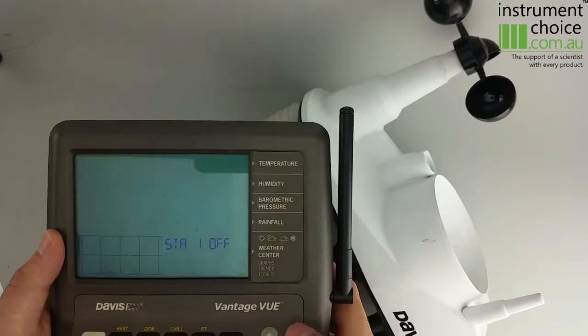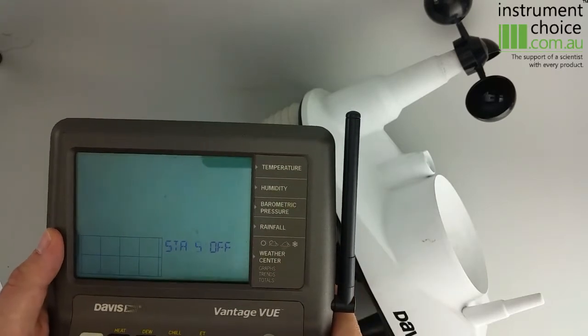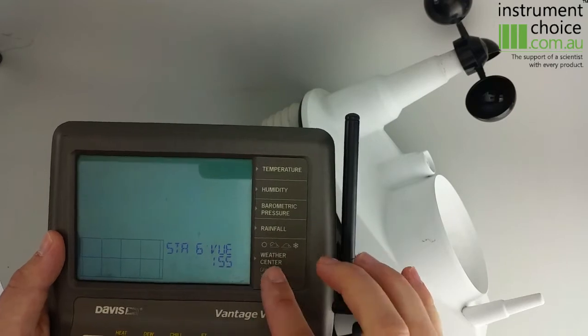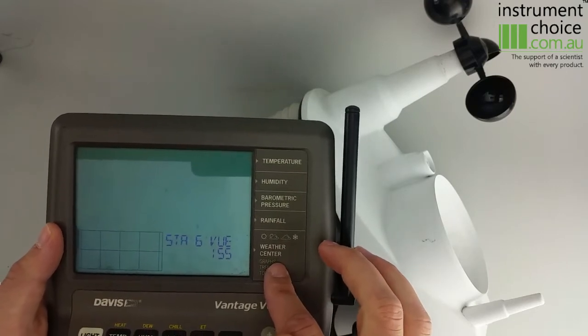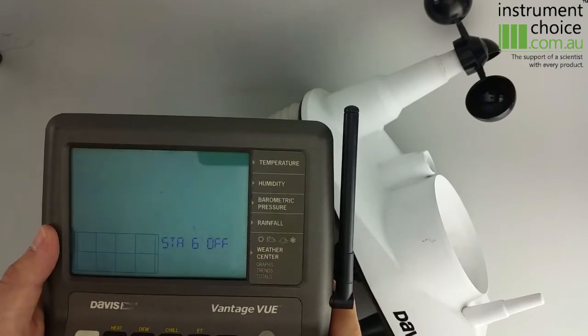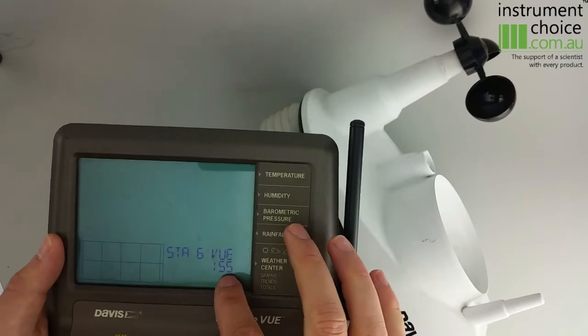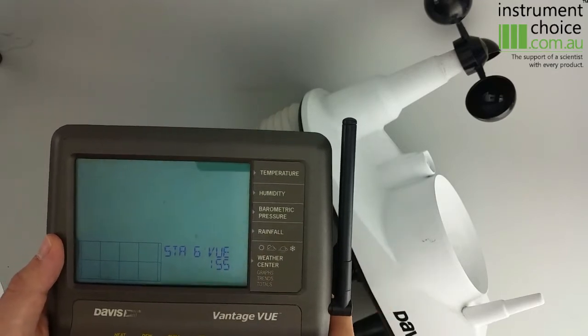In our particular case, we need to go through to Station 6 to set it to View ISS to let the console know that it's receiving from Station 6. To do this, you just hit the plus or minus arrow to show View ISS. You then hit the Done button.